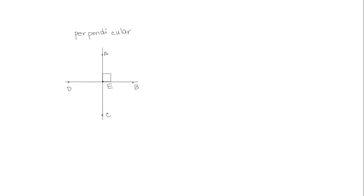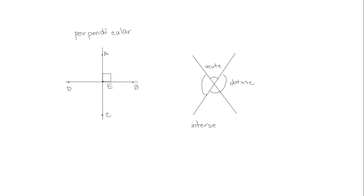Now let's look at two other lines. These lines are also crossing each other, but the angles formed are not right angles. These two angles are less than 90 degrees, so they're acute. And these two angles are greater than 90 degrees, so they're obtuse. So we say these two lines intersect, or they cross each other, so we call them intersecting lines. But they do not form right angles, so they're not perpendicular.